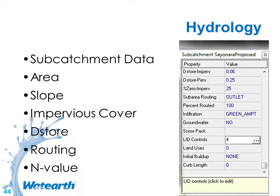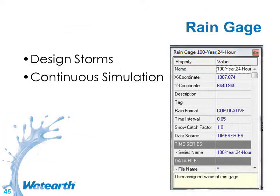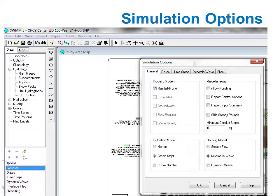Hydrology data goes into SWMM similarly to other models like HEC-HMS. Time series data is where you put your rainfall gauge data, and your rainfall gauge may not be an actual measured field gauge — it may just be a design storm or synthetic rainfall distribution you're using. For LID modeling, it's focused on rainfall-runoff. You can model water quality, but that's separate from LID controls. There are a few more components and parameters needed for the modeling.